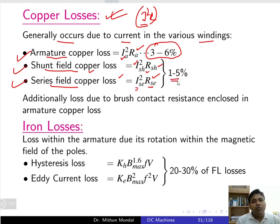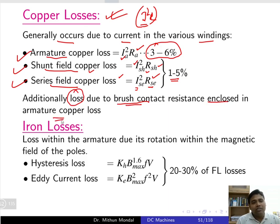Series field copper loss constitutes around 1.5 percent. In addition, the brush contact drop — whatever loss is associated with it — is included in the armature copper loss.